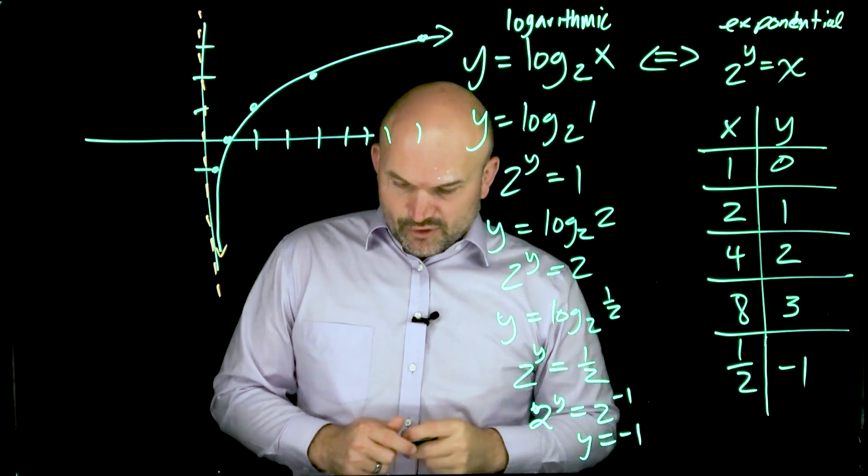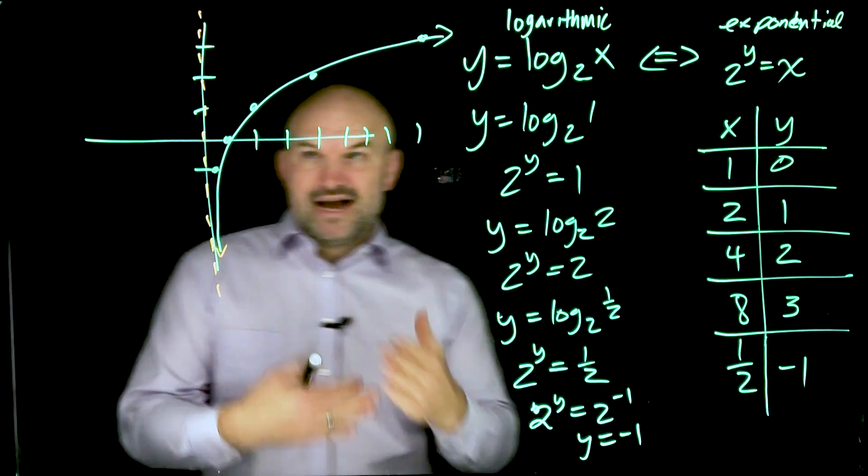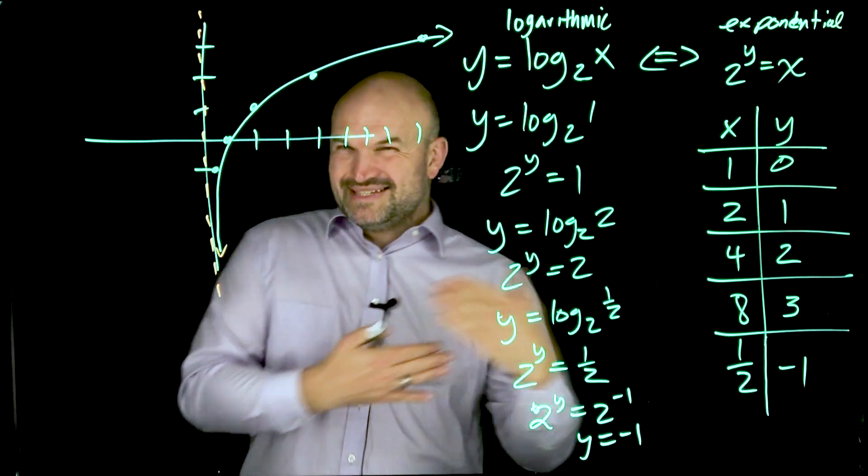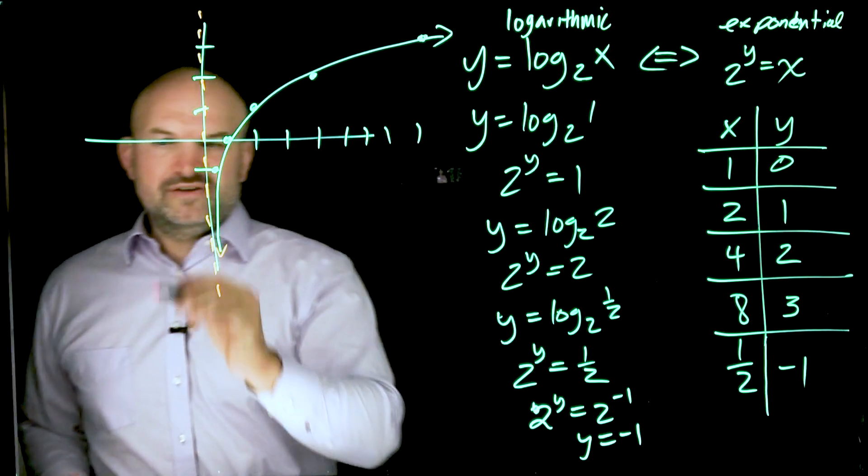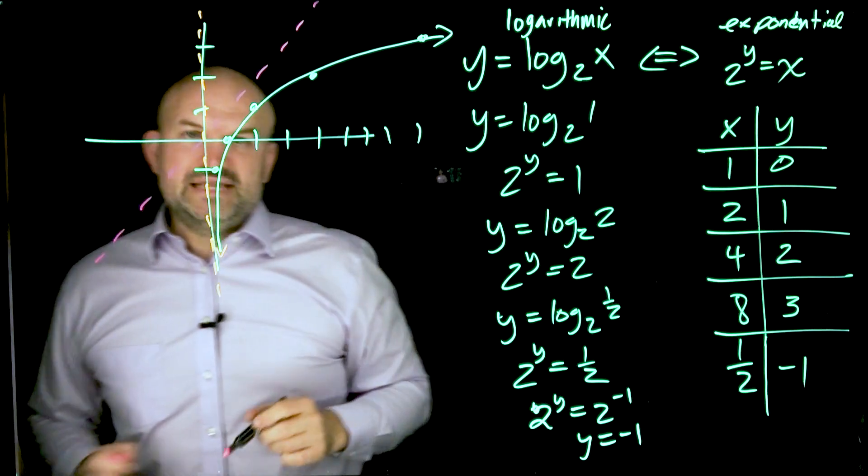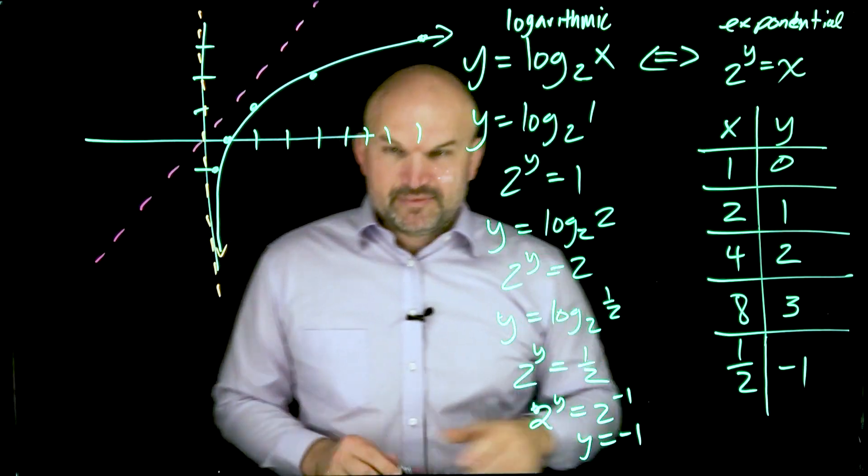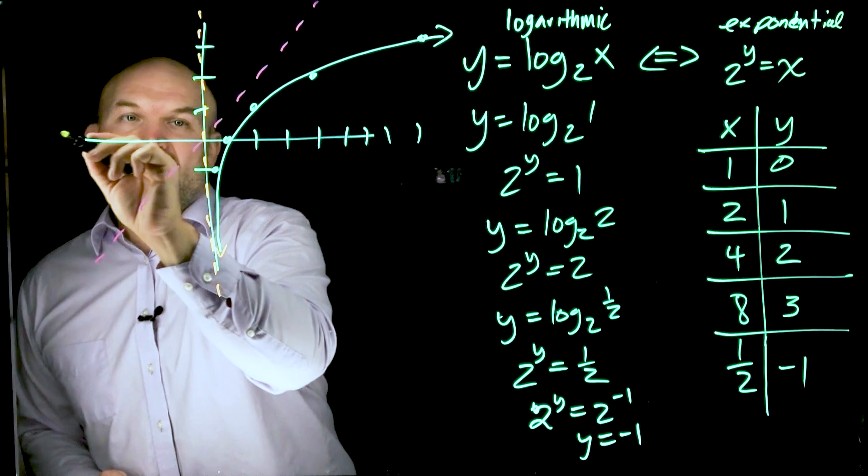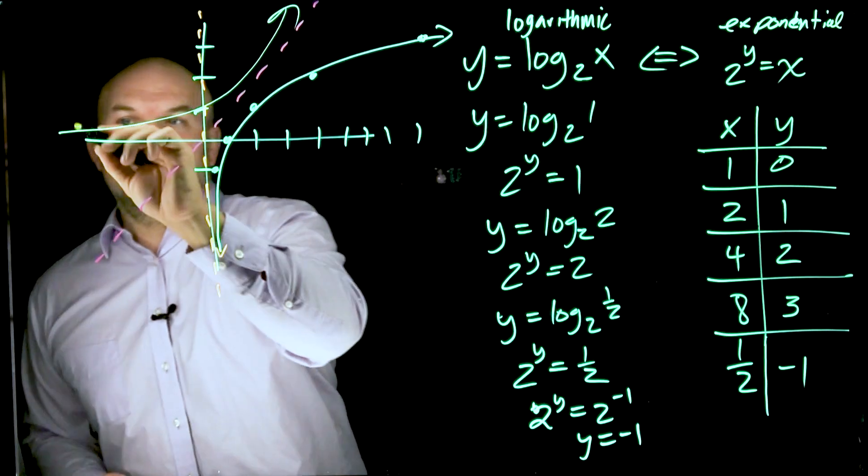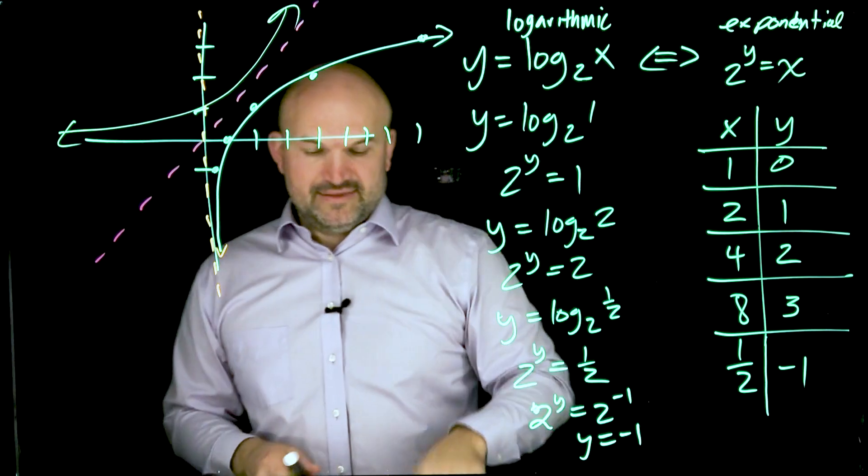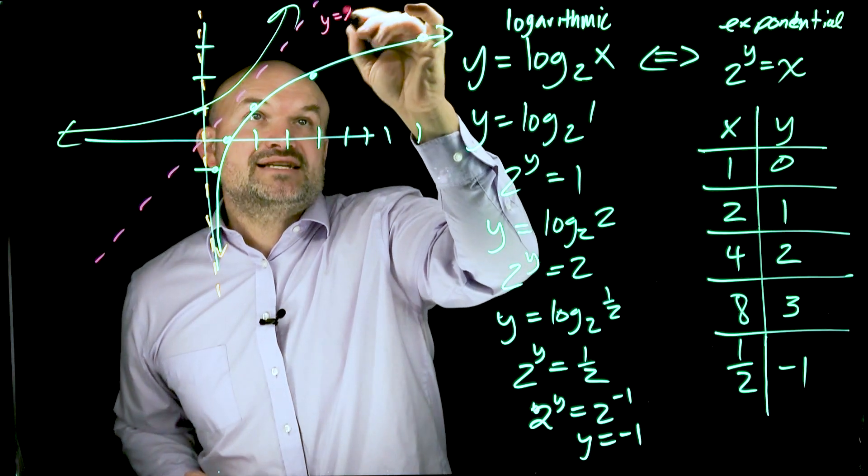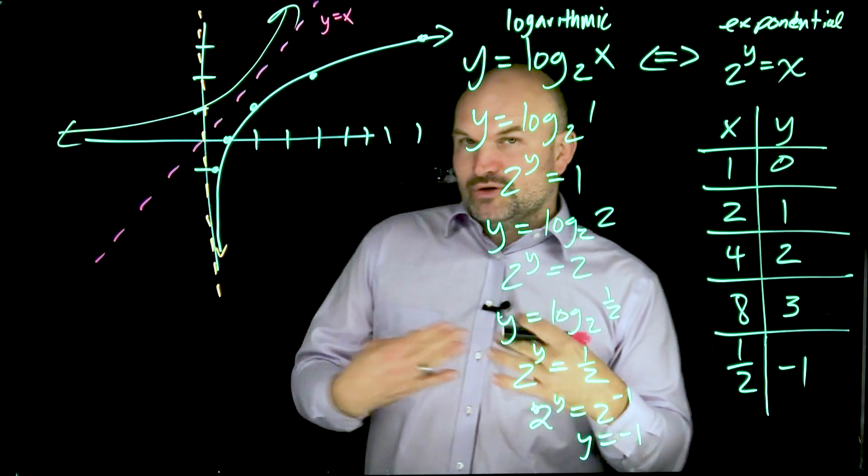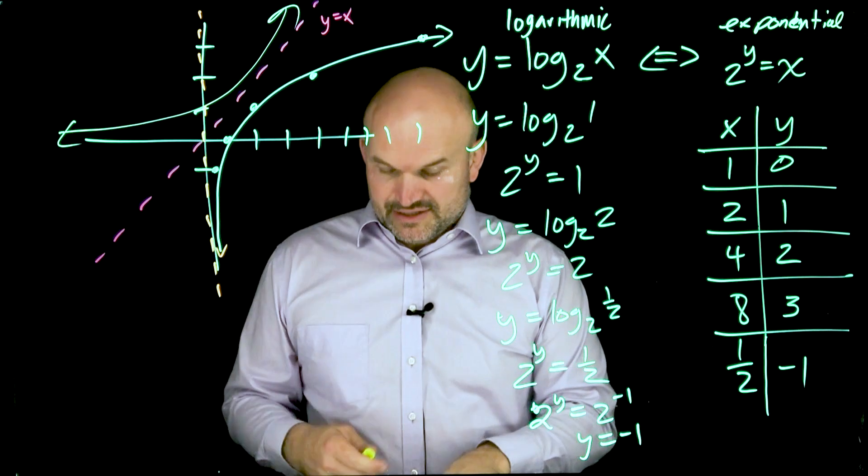There's also something that's really important about this. This graph looks very similar to the exponential graph. It's not exactly alike, but it's very similar. And there's a special relationship between the exponential graph and the logarithmic graph. They are what we call inverses of each other. They are reflective about this y equals x line.